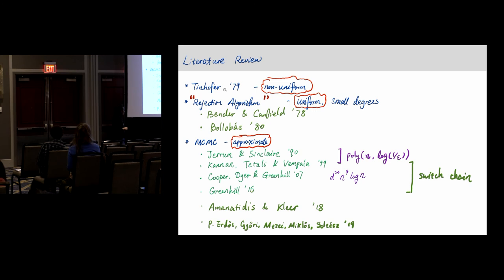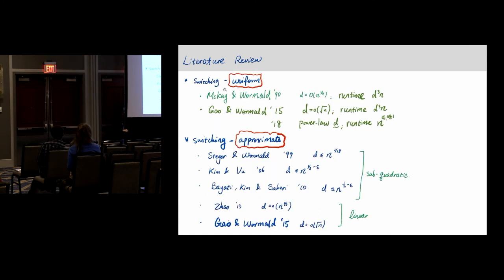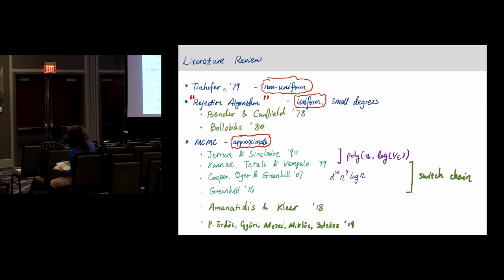The first time an algorithm started to appear with guaranteed performance for such a problem was by Jerrum and Sinclair in 1990. At the same time, McKay and Wormald in the same year used a completely different approach. The method Jerrum and Sinclair used, of course, is a Markov chain Monte Carlo method. Basically, start from a larger space of graphs that allow to modify the degree of two vertices. They studied some kind of Markov chain on that space and they showed fast mixing.